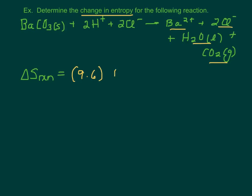Plus 2 times chloride. Its entropy is 56.5. Plus the entropy for water, which is 69.9. Plus the entropy for CO2, which is 213.6. Notice it's kind of big because it's a gas. And then minus the entropy for barium carbonate. So minus 112.1.